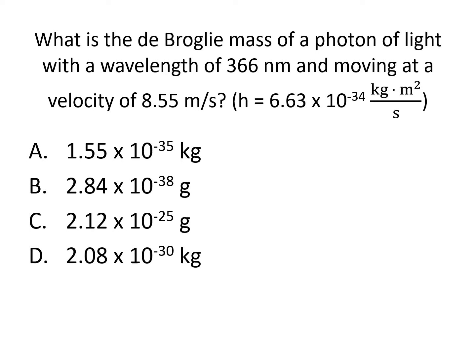What is the de Broglie mass of a photon of light with a wavelength of 366 nanometers and moving at a velocity of 8.55 meters per second? h equals 6.63 times 10 to the minus 34 kilograms meters squared per second.